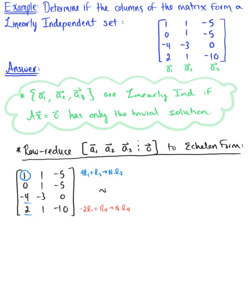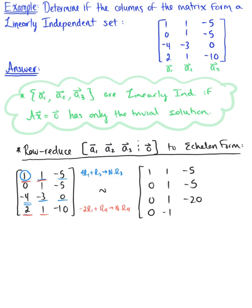The equivalent matrix: the first two rows remain as they are — 1, 1, negative 5 and 0, 1, negative 5. For the third row: positive 4 minus 4 gives 0; positive 4 minus 3 gives 1; and negative 20 plus 0 gives negative 20. For the fourth row: negative 2 plus 2 gives 0; negative 2 plus 1 gives negative 1; and positive 10 minus 10 gives 0.